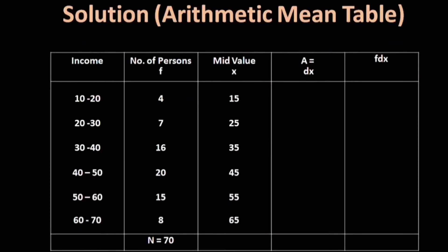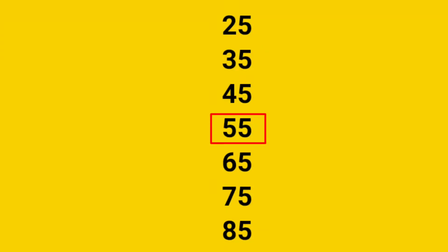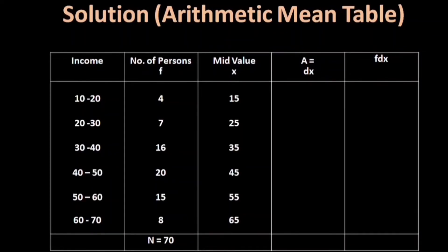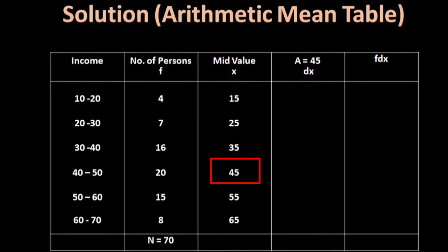Looking at the middle values, we select the assumed mean A from the central value. We choose A equal to 45, which is the middle of the six values. F is frequency and X is mid values. The formula is DX equals X minus A.